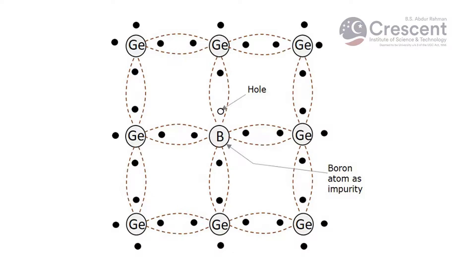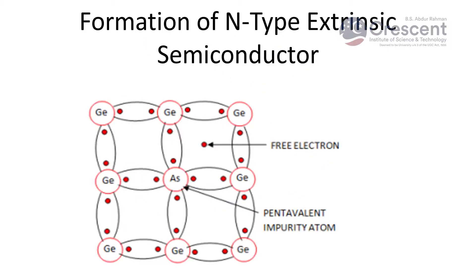We know that each silicon atom will have four electrons in its outermost shell. When a boron impurity is added to a silicon atom to form a p-type extrinsic semiconductor, the three electrons in boron's outermost shell pair up with three electrons in the silicon atom's outermost shell. The remaining free electron tries to attract electrons from the neighboring silicon atom, which results in the creation of a hole. That is why this type is known as p-type extrinsic semiconductor.